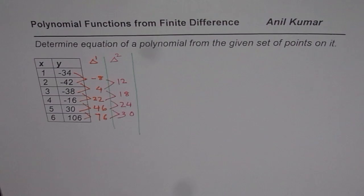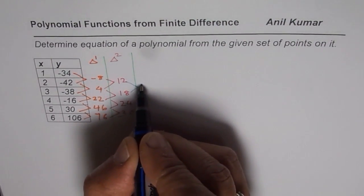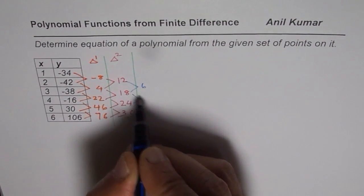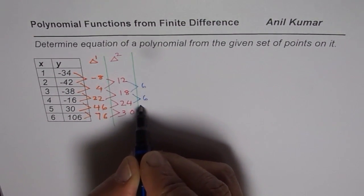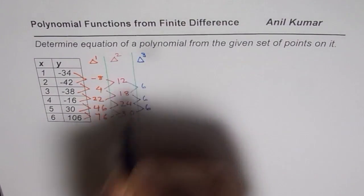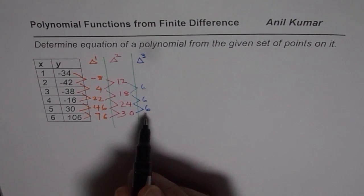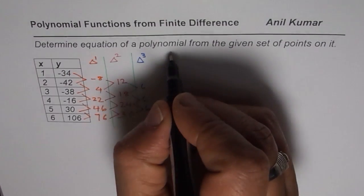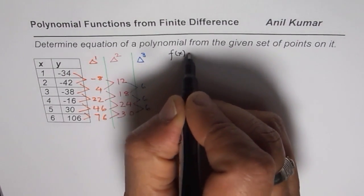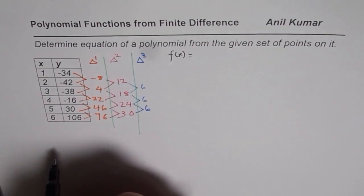This time, let us do 18 minus 12, which is 6. 24 minus 18 is 6. 30 minus 24 is 6. What we find here is that the third finite difference is constant at 6. Third finite difference being constant means this is a cubic function, meaning we can write f(x) as a polynomial of degree 3.